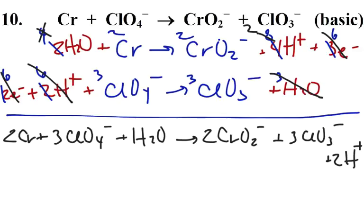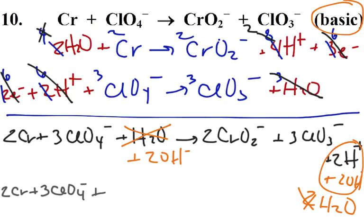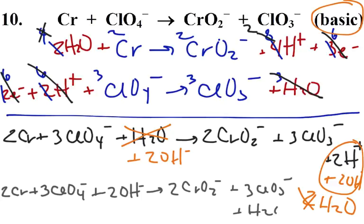Again, this is a basic solution, so I'm going to add two hydroxides to each side. That makes two waters on the right side. Two waters and one water - this one water will cancel, and the two changes to a one. So my final equation is two Cr plus three ClO4 minus, plus two OH minus, turns into two CrO2 one-minus, plus three ClO3 one-minus, plus H2O. And there, we've balanced four tough reactions.